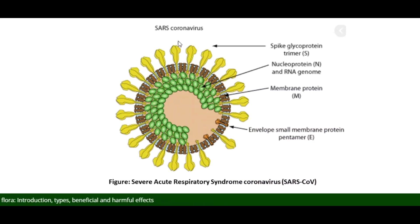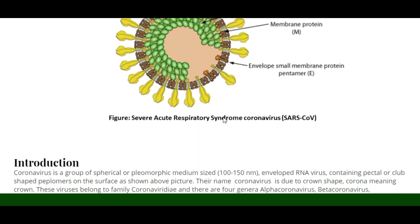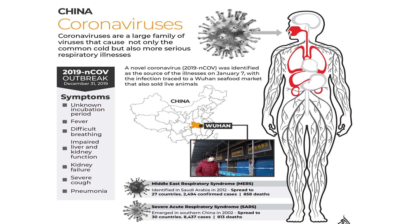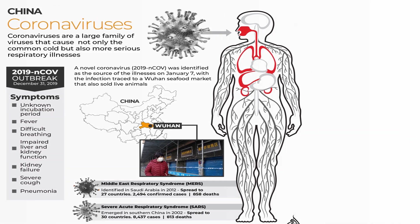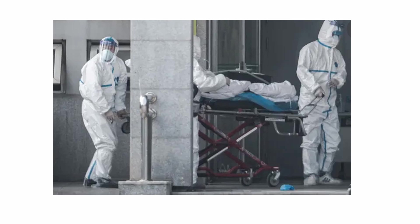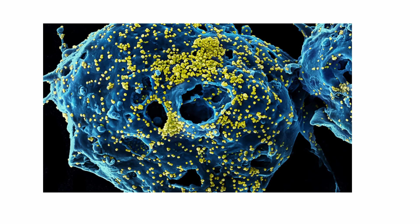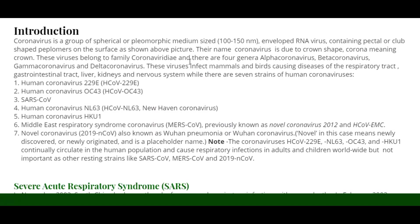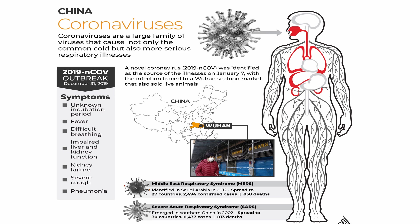This is the typical structure of SARS-CoV. Coronaviruses are a group of spherical or polymorphic, medium-sized 100 to 150 nanometer enveloped RNA viruses containing pectoral or club-shaped peplomers on the surface, as shown in the picture above. Their name 'coronavirus' is due to their crown shape — corona meaning crown. These viruses belong to the family Coronaviridae and there are four genera, and they infect mammals and birds, causing disease of the respiratory tract.